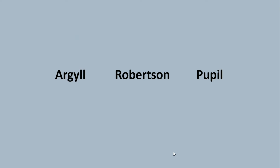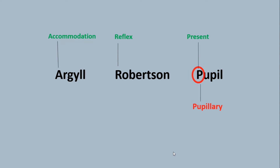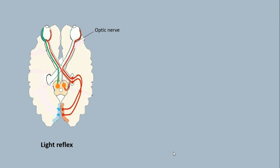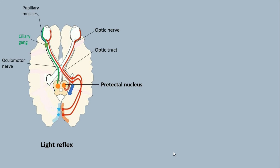On examination, the accommodation reflex is present, while the pupillary light reflex is absent. This is because afferent fibers for the light reflex leave the optic tract and enter the pre-tectal area of the midbrain. Efferent fibers travel in the oculomotor nerve to reach the ciliary ganglion, and supply pupillary muscles through short ciliary nerves.